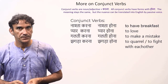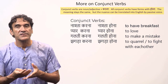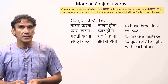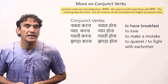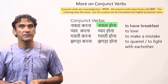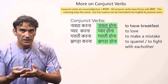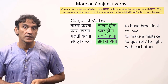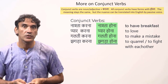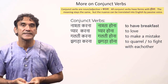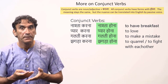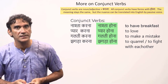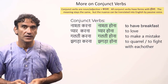Today we'll learn more about conjunct verbs. There's an interesting feature: with conjunct verbs using 'karna', the verb 'karna' can be replaced by the verb 'hona'. For example: 'nashta hona', 'pyaar hona', 'galti hona', 'jhagda hona'. This produces the same meaning, but with a nuance that can be translated into English as a passive construction.